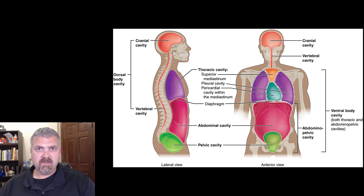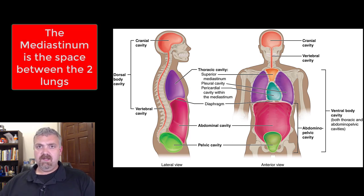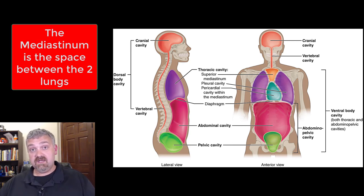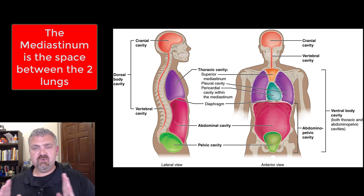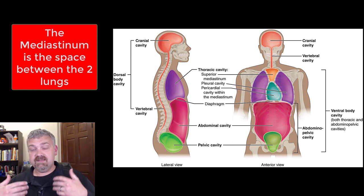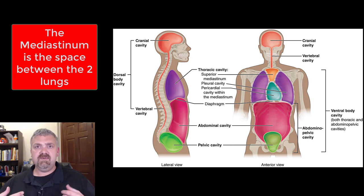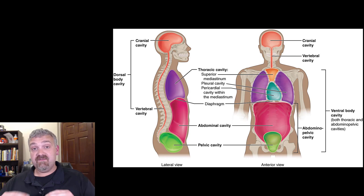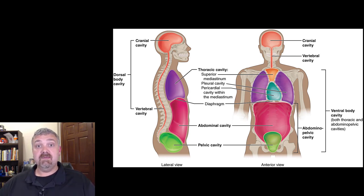Another term that will come up again, especially when we're talking about the heart, will be the mediastinum. Your pleural cavities are where your two lungs are, and the pericardial cavity is where your heart is. But the mediastinum is the entire space between your two lungs. So the heart's in there, but so are the great vessels like the aorta that come off the heart. Your thymus gland would be there and other structures as well. Remember, the diaphragm separates the thoracic cavity from the abdominal pelvic cavity, and the mediastinum is the space between your two lungs.